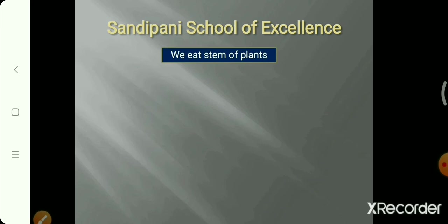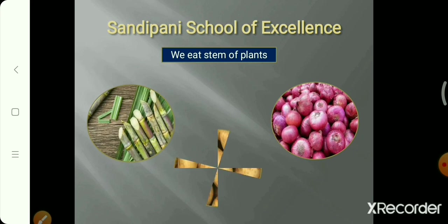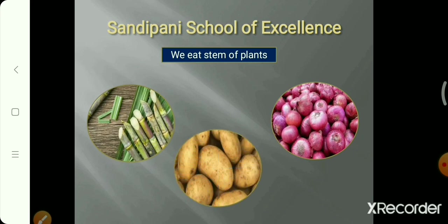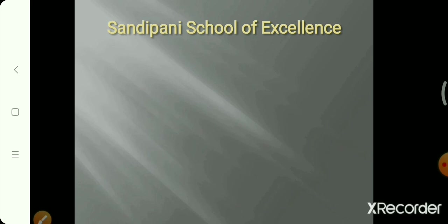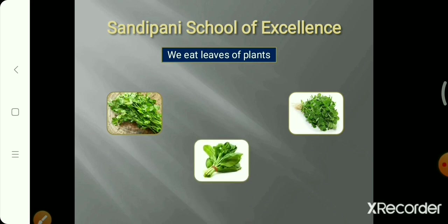We also eat the stem of some plants — like sugarcane, onion, and potato. These are the stem parts of plants. We also eat leaves of some plants, like coriander, fenugreek, and spinach. We eat the leaves of these plants.